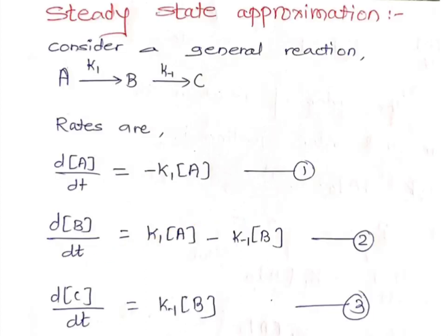Steady state approximation is the new topic of today's lecture. Steady state approximation means the rate of change of concentration of intermediate is nearly considered to be 0. Consider a general reaction: A is a reactant which gives B, B is the intermediate, and it gives C.